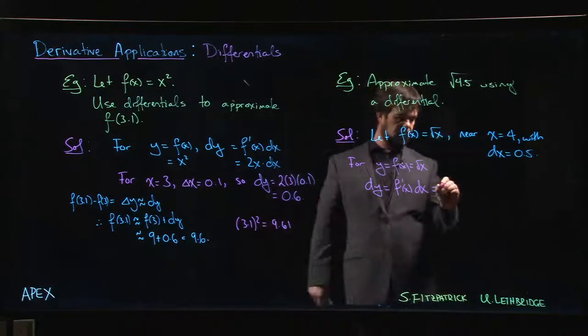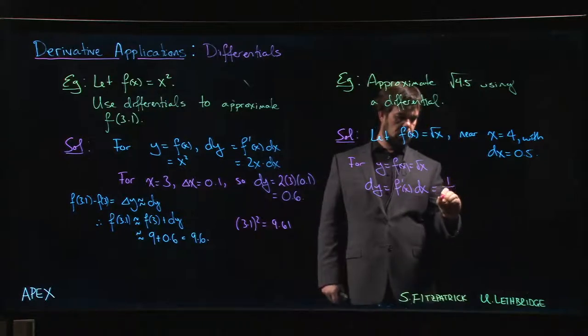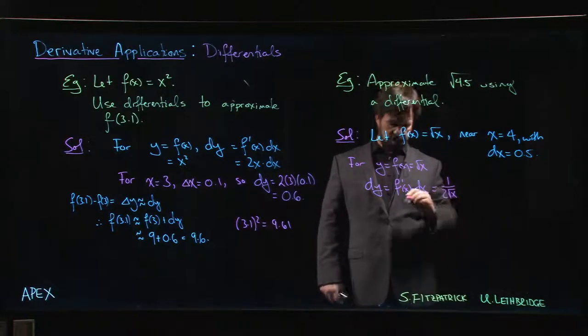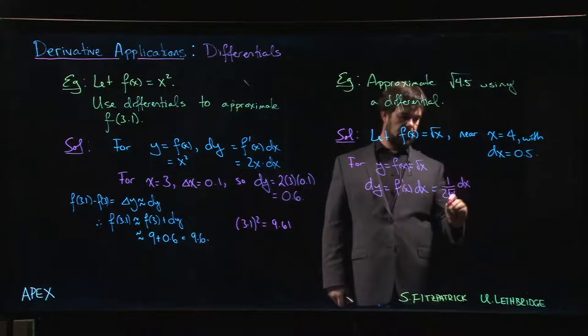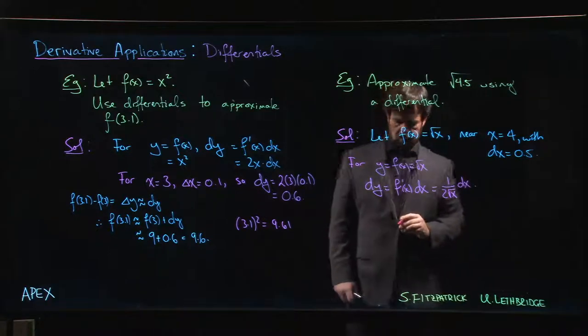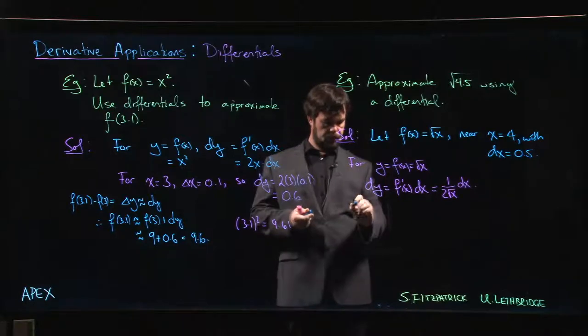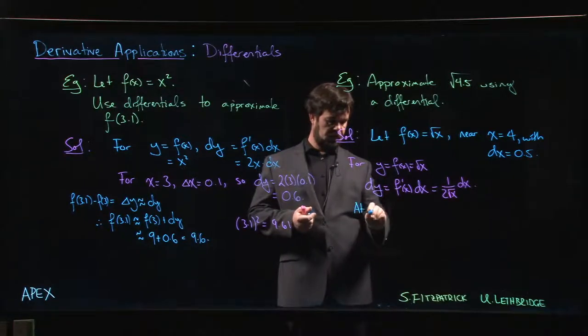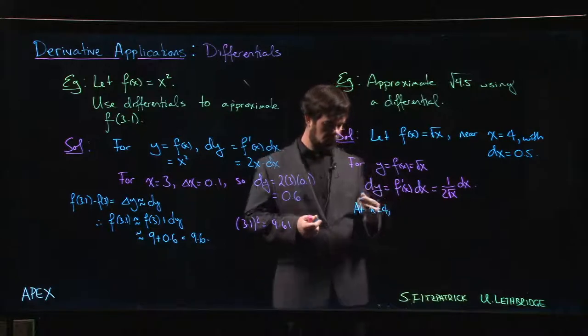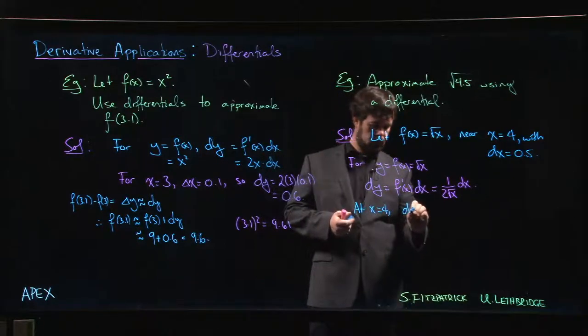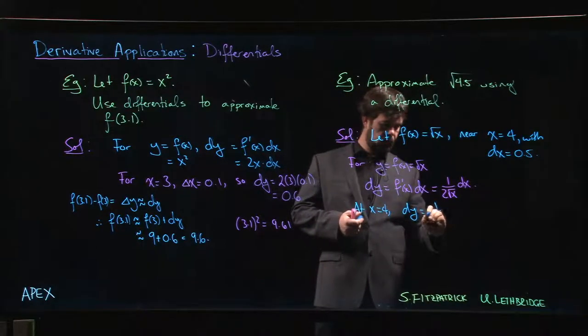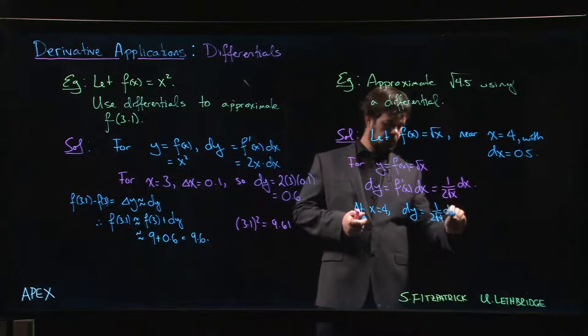Remember, the derivative of the square root function is 1 over 2 root x, times dx. Now at x equals 4, we get dy is 1 over 2 root 4 times dx.